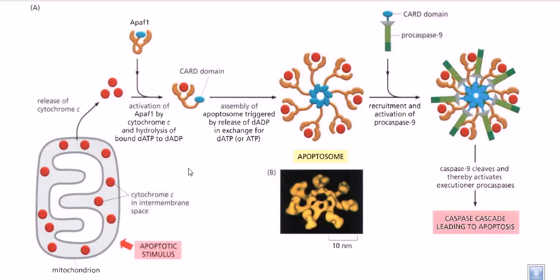Previously when we talked about killer cells killing a cell, any type of stimulus was coming from outside the cell telling it to be killed. But in the intrinsic pathway, the cell is informed to be killed from information coming from inside the cell — from cellular members like mitochondria. That's why it is called the intrinsic pathway: the relay information that the cell has to die is coming from any member inside the cell.